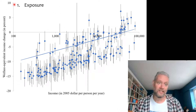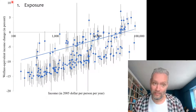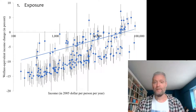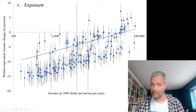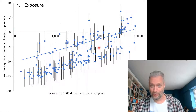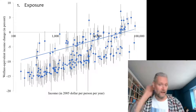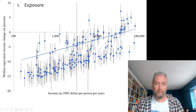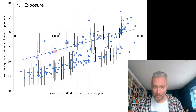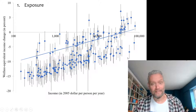On the vertical axis we still have the Hickson equivalent variation, the welfare equivalent income change. On the horizontal axis we're looking at per capita income in the year 2015. This is a logarithmic scale and it runs from very poor to very rich. The pattern is obvious: the negative impacts of climate change are concentrated in poor countries, and the positive impacts of climate change are concentrated in rich countries.